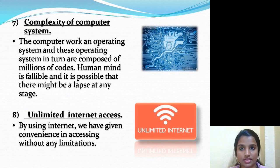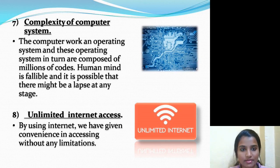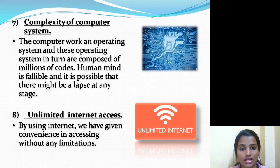The seventh reason is the complexity of computer systems. Computer systems run on operating systems composed of millions of codes. The human mind is fallible, and there might be a lapse at any stage. Cyber criminals take advantage of these lapses and lacunas to penetrate computer systems. Such criminals are called hackers, who exploit the weaknesses in existing computer systems and security devices.